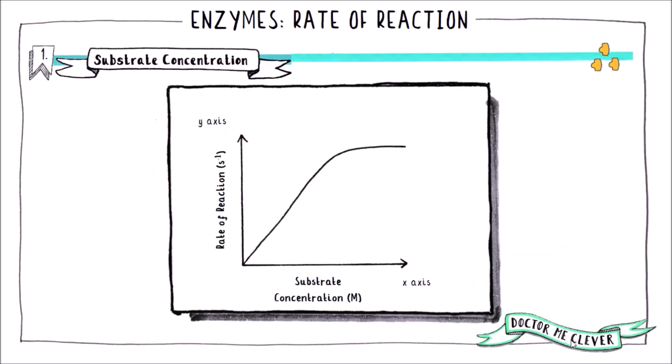If we had a series of test tubes each containing the same concentration of enzyme but with a different concentration of substrate added to each, and then plotted the rate of reaction in each tube against the substrate concentration, we would get a graph that looks a little bit like this. Rate of reaction is always on the y-axis with units of seconds to the minus one, and the variable being tested — in this case substrate concentration — is on the x-axis with units of molarity.